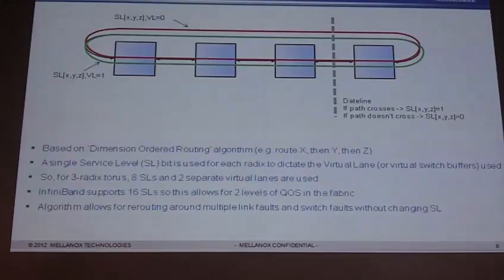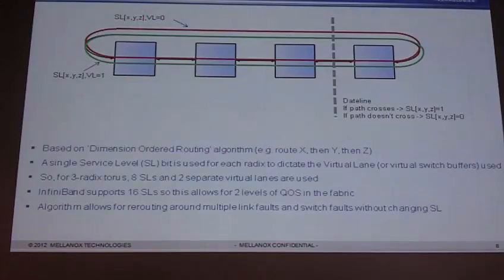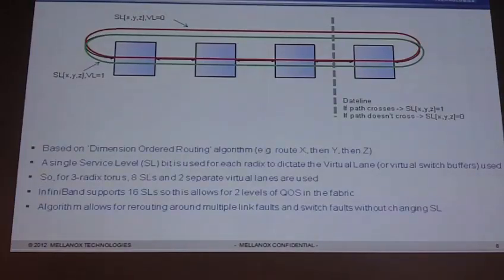The algorithm is based on dimension order routing — you always go in the X direction first, then Y, then Z. It uses a service level bit for each of the radix to dictate the virtual lane: service level bit zero for X, service level bit one for Y, service level bit two for Z. I build up my service level by setting the bit to one if I cross the dateline in that dimension, and zero if I don't, determining what service level I use as I go through my fabric.